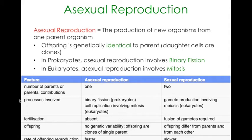Here are some of the features. In terms of number of parents and parental contributions, you can already see the difference. In asexual reproduction you only need one parent; in sexual reproduction you need two. The process involved is binary fission and mitosis in asexual reproduction, while for sexual reproduction it is a process called meiosis, which you will learn about in the next chapter. Fertilization does not occur in asexual reproduction but is present in sexual reproduction — the gametes need to combine and the egg needs to be fertilized by the sperm. The offspring are genetically identical or clones of the parent in asexual reproduction, and genetically different from the parents and from each other in sexual reproduction.